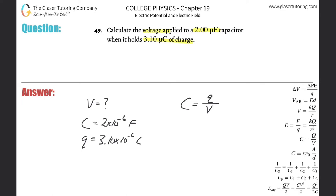So if I want to find voltage, all I got to do is just rearrange. So simply plug in the charge, 3.10 times 10 to the minus 6, all divided by the capacitance, 2 times 10 to the minus 6, and voila.